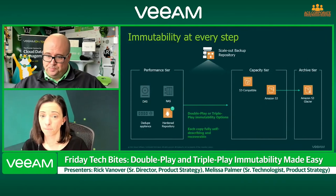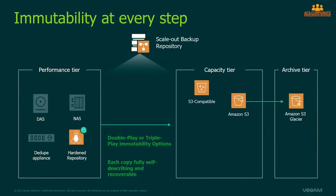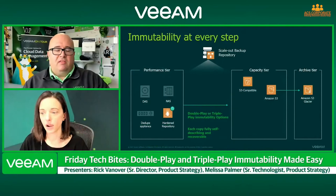The first thing to zoom into is that when I say there's immutability at every step, there's a really central technique: the Scale-Out Backup Repository. I have my own definition — it's like VMware for backup repositories, almost. We're taking your physical backup repositories and putting them into a logical construct that's easy to manage and access. Through the power of policy, we move your data to whatever tier it should be in at the appropriate time based on your requirements.